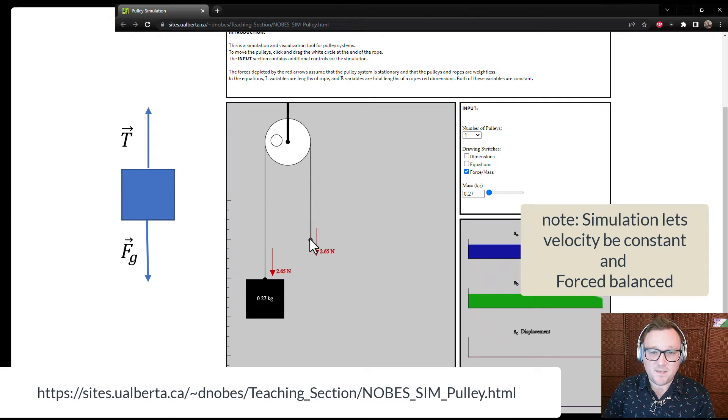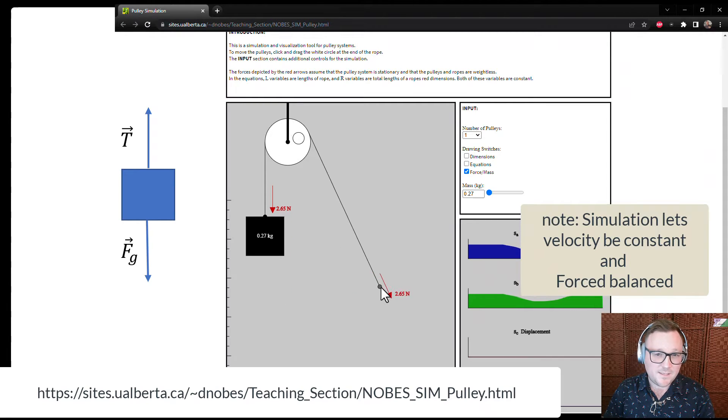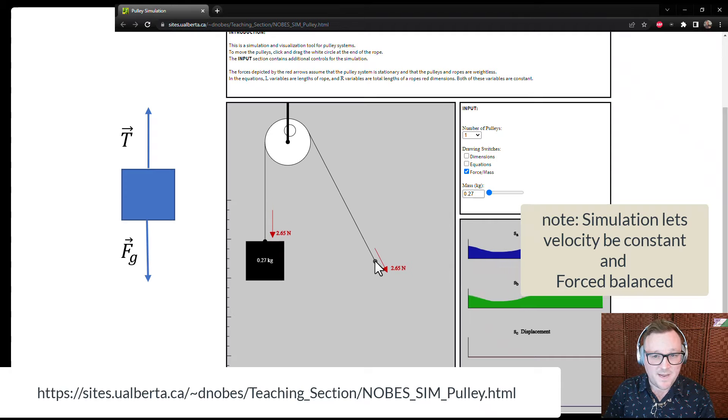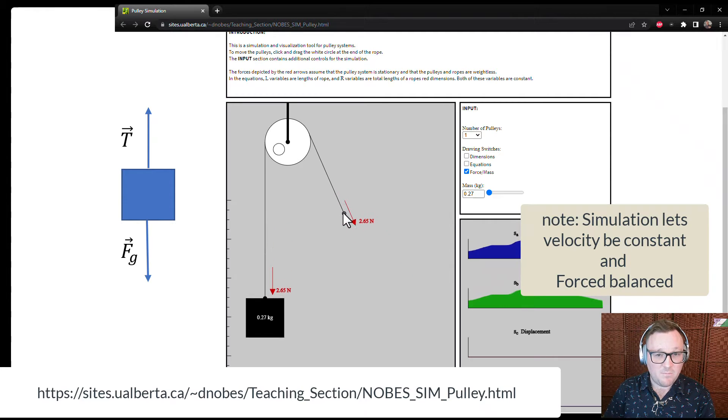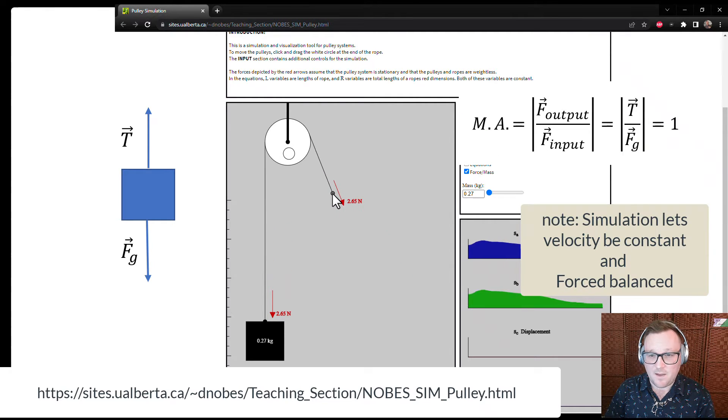Using this U of A simulation, let's see how we can redirect the force using a pulley. In this case, the free body diagram for the mass is the same as before, but we can pull it down and the object moves up. The pulley, in this case, redirects the force.